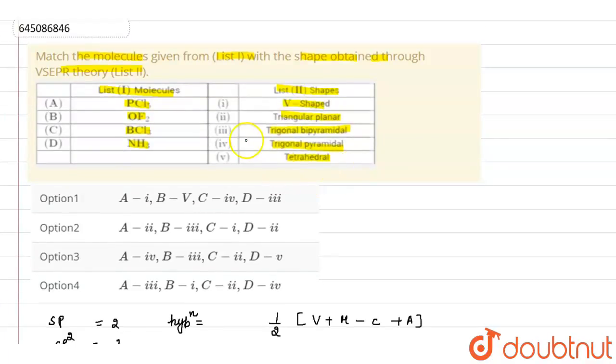And as it is sp3d hybridized, that means its shape will be trigonal bipyramidal. Because when the hybridization is sp3d, then the shape is trigonal bipyramidal. So A matches with trigonal bipyramidal.